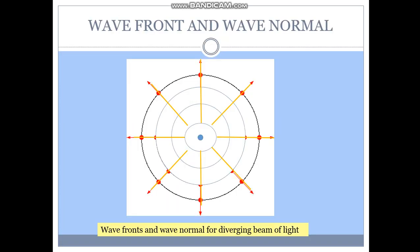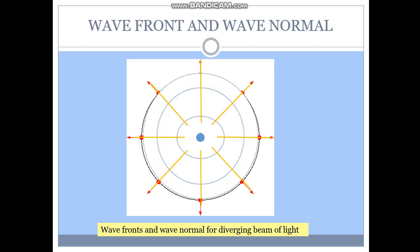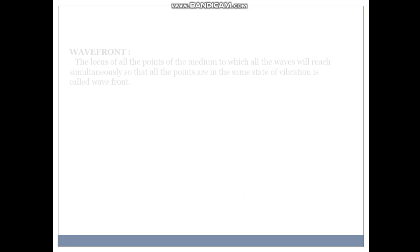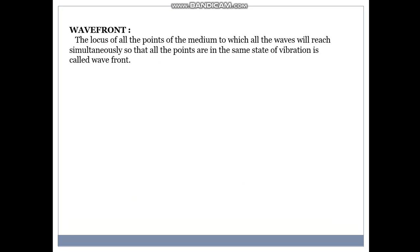Now let us see what are wave fronts and wave normals. These are the wave fronts and wave normals of diverging beam of light. It's in the three-dimensional sense. Now let's see. The wave front is the locus of all the points of the medium to which all the waves will reach simultaneously so that all the points are in the same state of vibration. The wave front is called wave front.